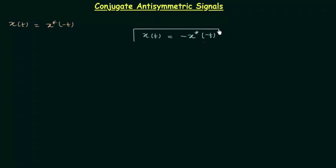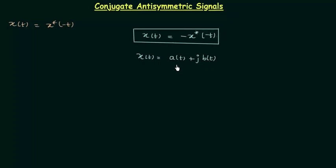By using this condition we will find out the even and odd components of signal x(t). Let's say signal x(t) = a(t) + jb(t), where a(t) is the real part and jb(t) is the imaginary part of signal x(t). We will first find out x(−t) by performing time reversal, giving us a(−t) + jb(−t).